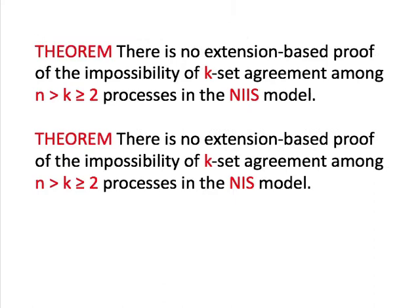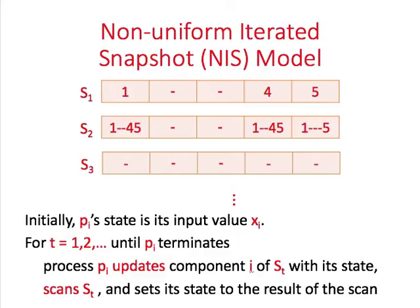In our STOC 2019 paper, we proved that there is no extension-based proof of the impossibility of k-set agreement among more than k processes in the non-uniform iterated immediate snapshot model. Since then, we have proved the same result in the non-uniform iterated snapshot model. The proof is similar but requires no topology to understand. In the non-uniform iterated snapshot model, processes communicate using an unbounded sequence of single-writer snapshot objects, which each process accesses in order. The first access updates its component with its state.